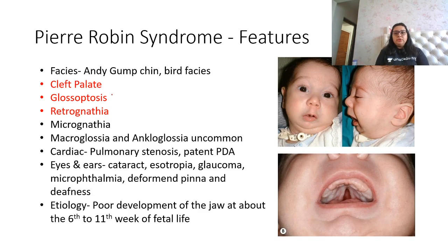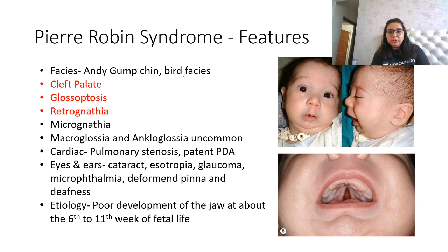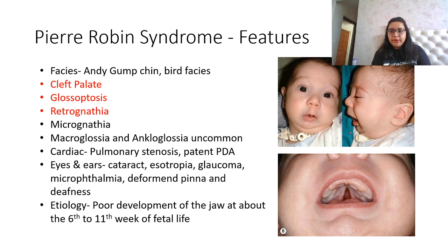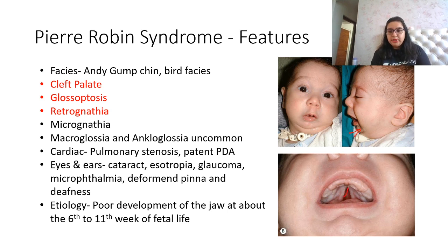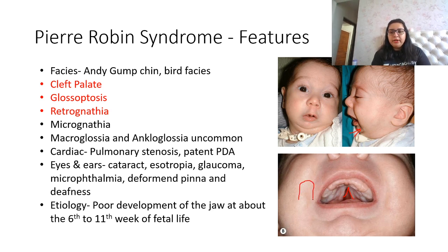Before explaining Pierre Robin syndrome, look at the images carefully. The first picture shows a baby with a typical bird-like face who has had a tracheostomy done. The second picture shows significant retrognathia — the chin is retracted, which is a typical feature of Pierre Robin syndrome. The third shows a V-shaped cleft palate; in some cases a U-shaped cleft palate can also be found.